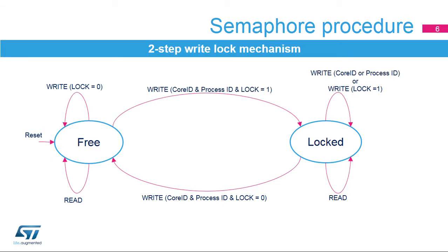In the two-step write-lock procedure, a free semaphore will be locked by writing 1 to the lock bit in the semaphore write-read register. The core ID and process ID used during the write will be stored in the semaphore. A process has to check that the semaphore is locked by it by reading back the write-read register. If the read-back semaphore core ID and process ID matches the one written by the process locking the semaphore, it is locked by it. If the core ID or process ID doesn't match, the semaphore has been locked by another process. A locked semaphore can only be unlocked by writing the lock bit to 0 with the corresponding core ID and process ID.